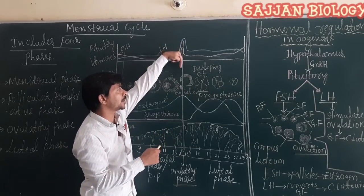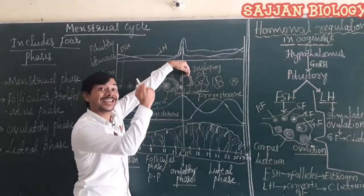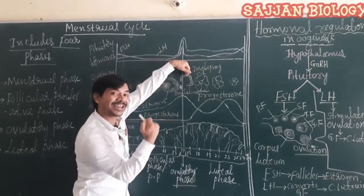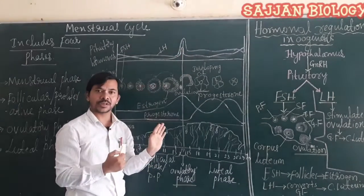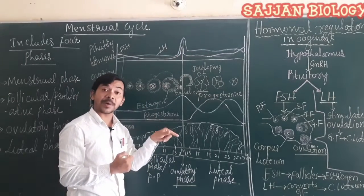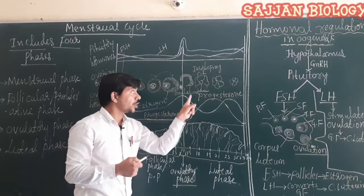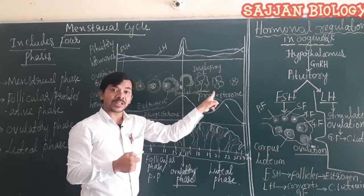Once the secondary oocyte is released, the secretion of FSH and LH declines. If fertilization is confirmed, the zygote undergoes implantation on the endometrium wall, and the menstrual cycle stops during pregnancy.